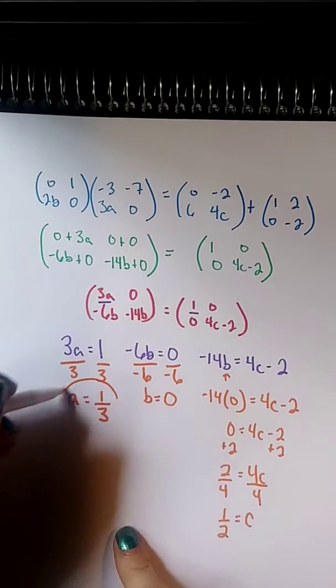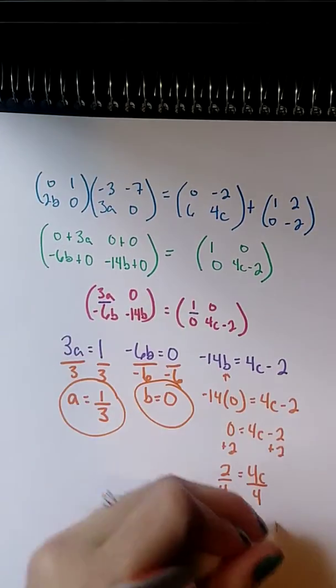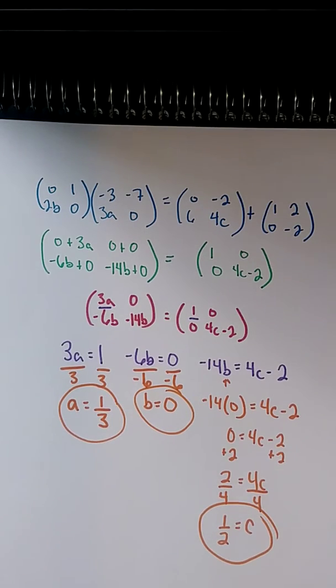So, I end up with a is 1/3, b is 0, and c is 1/2. And we found all three solutions for question 4. We'll pick up with question 5 in the next video.